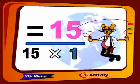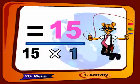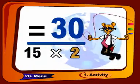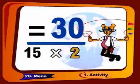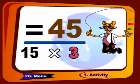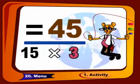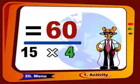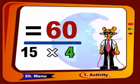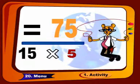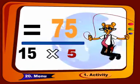15 ones are 15, 15 twos are 30, 15 threes are 45, 15 fours are 60, 15 fives are 75.